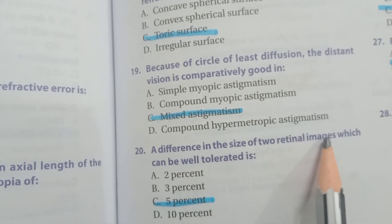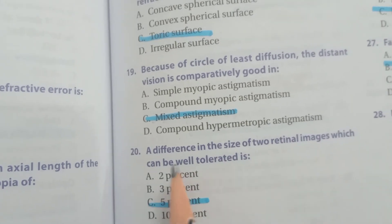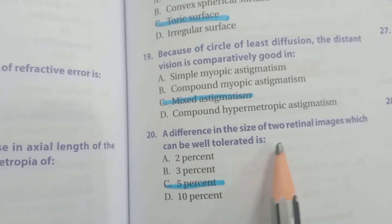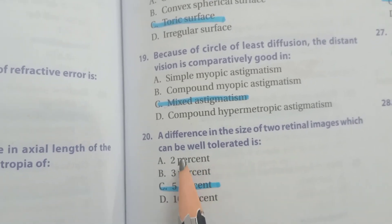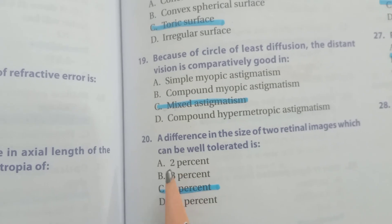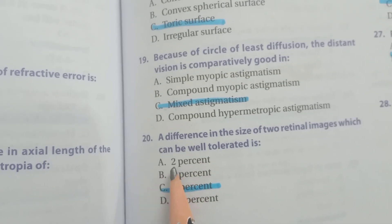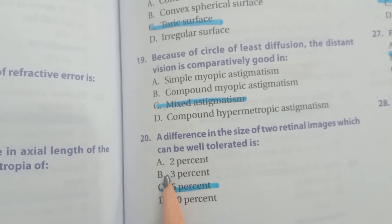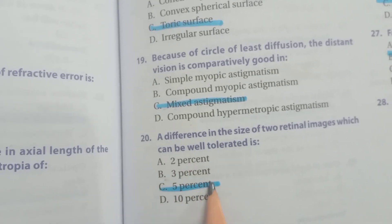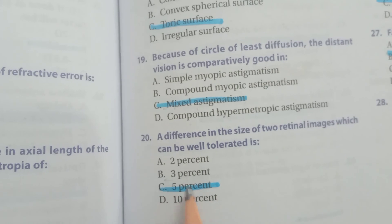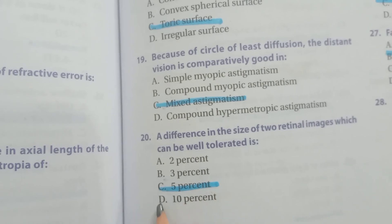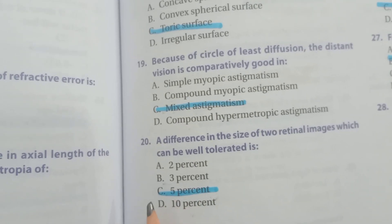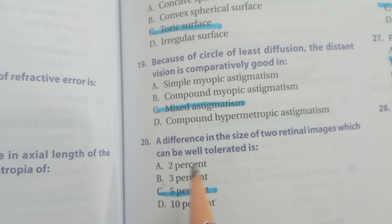Question number twenty: a difference in the size of two retinal images which can be well tolerated is — A) 2%, B) 3%, C) 5%, D) 10%. The correct option is D) 10%.